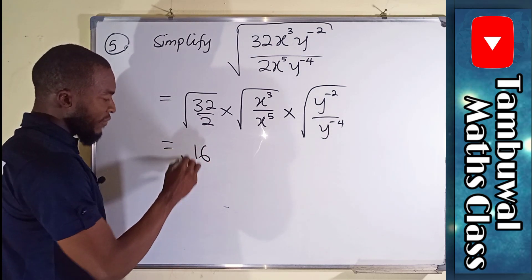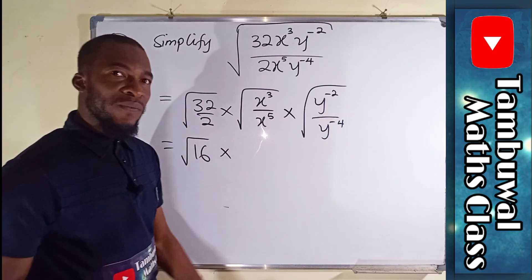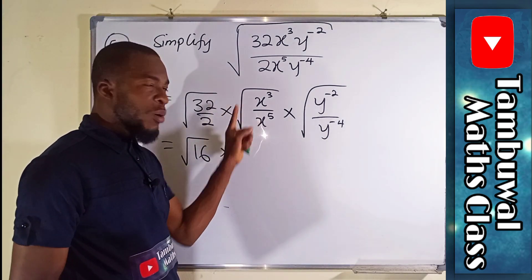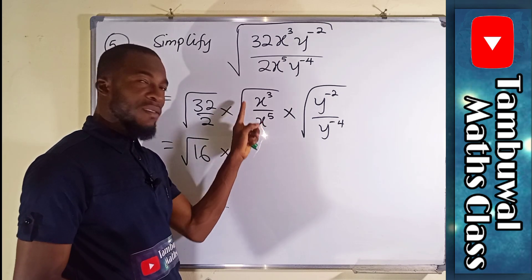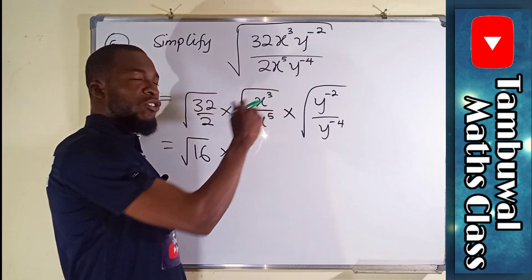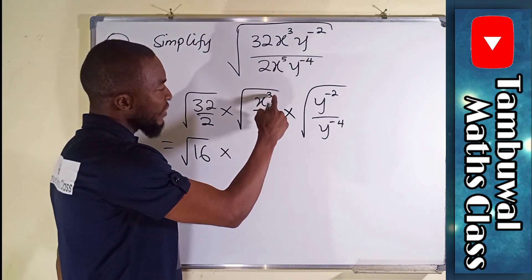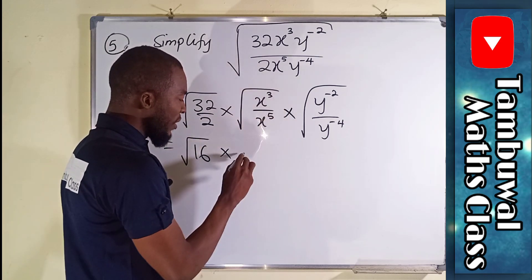For laws of indices, it says when you have common base, you see we have the same base x and x, and if they are dividing, take the power to the top and subtract the power to the bottom, which is the same thing as saying 3 minus 5.